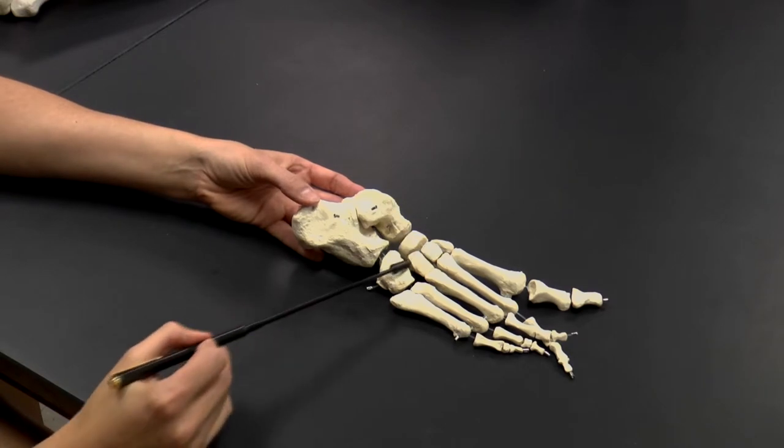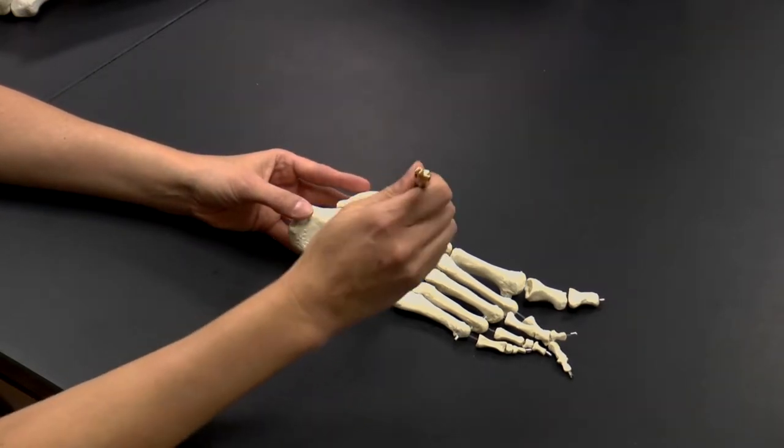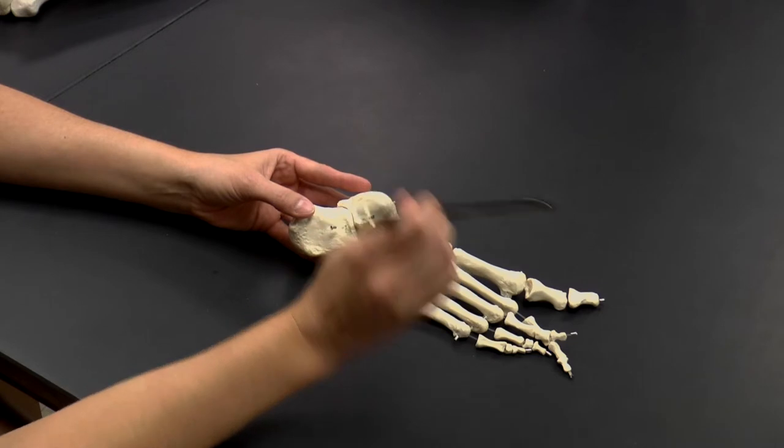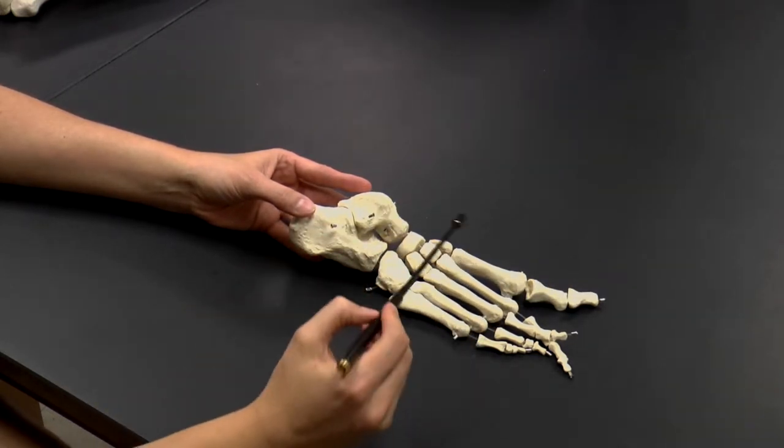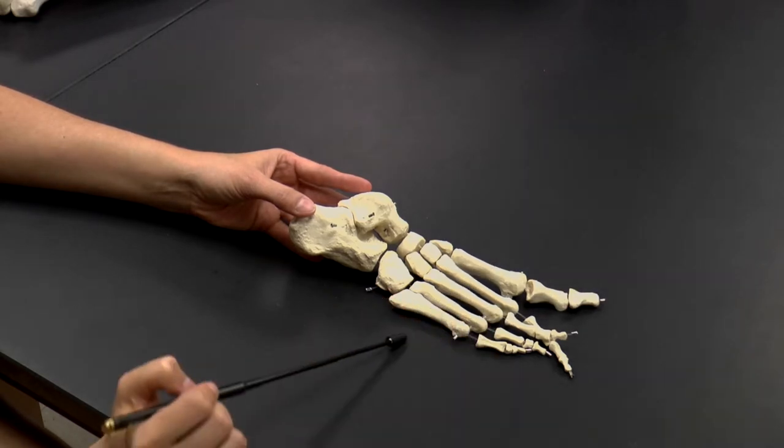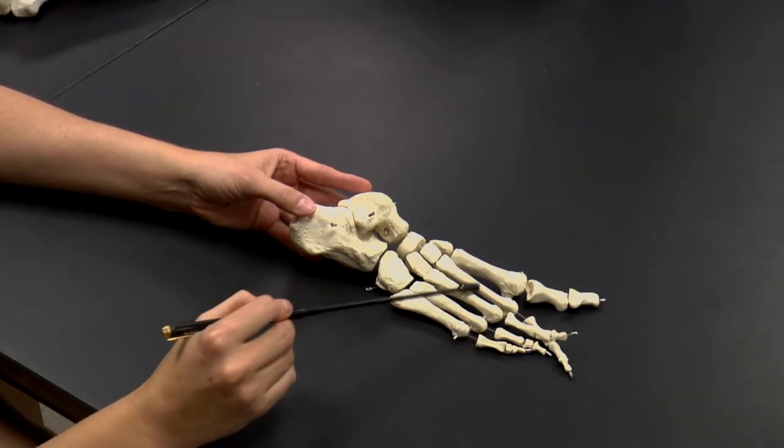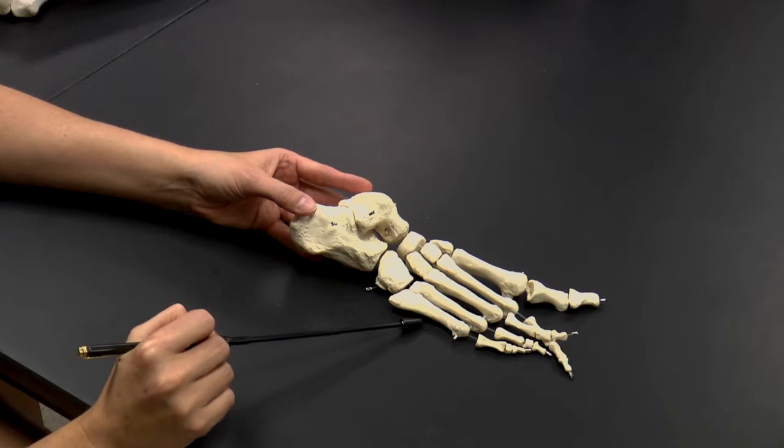Here you see again the tarsal bones. And then here we have, this is medial, so this is our big toe area, and this is our pinky toe. Working our way from the medial to the lateral, we have our metatarsal bones, five metatarsals.